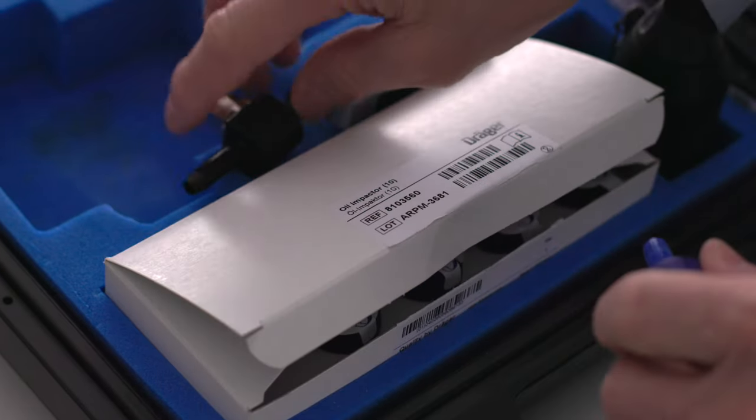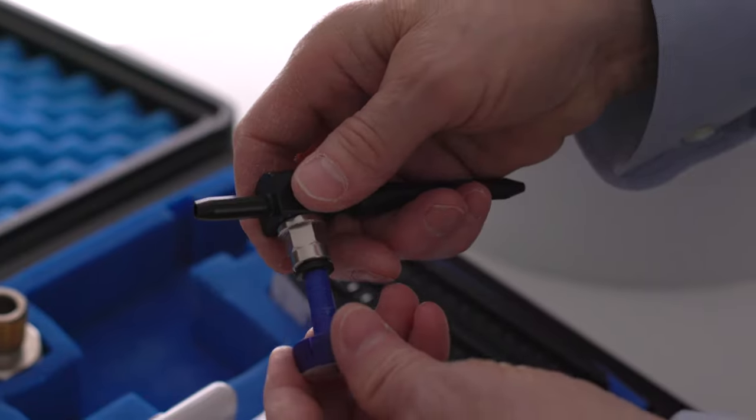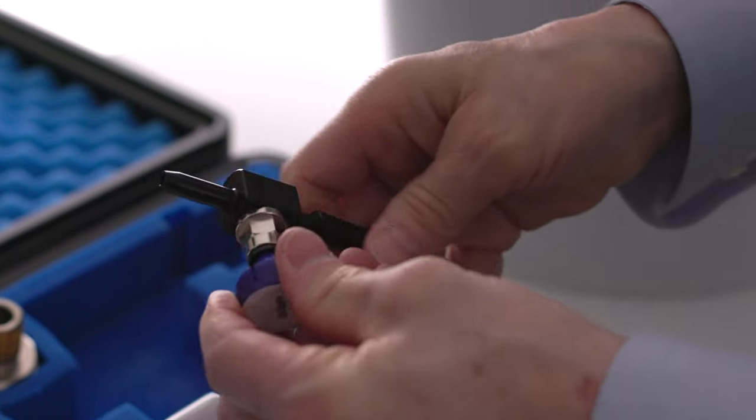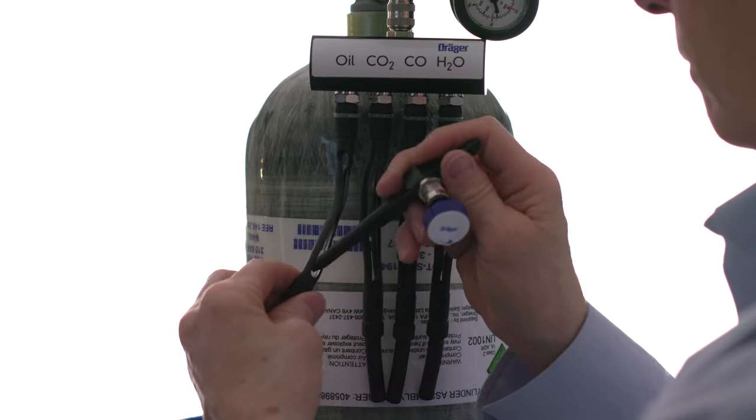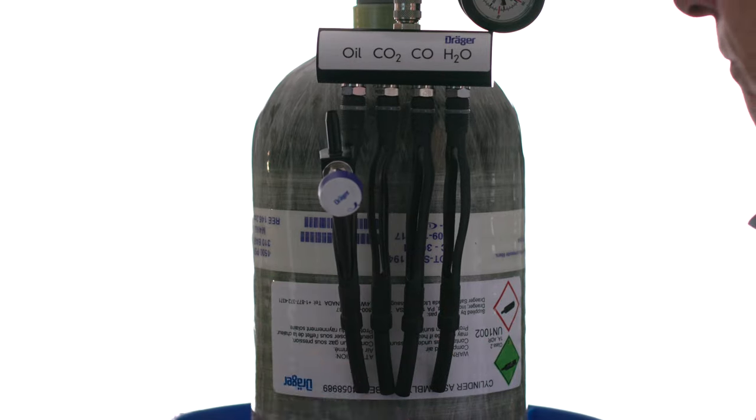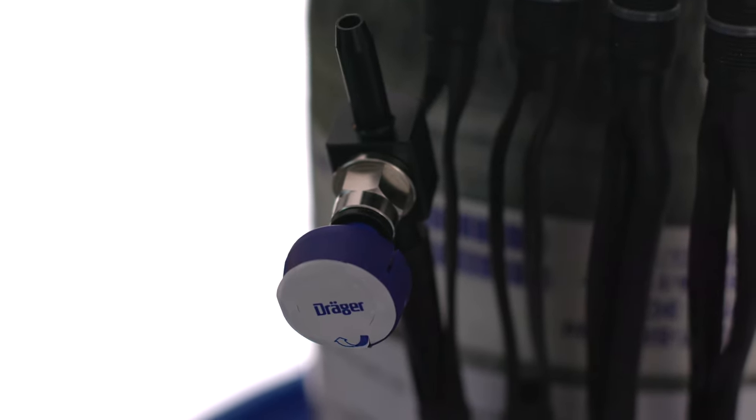Attach an oil impactor to the impactor adapter and insert the adapter into the bottom of the holder designated for oil, leaving the top part disconnected for now. Now, Dreger replaced the oil tube with the oil impactor some years ago because the impactor displays mineral oils and synthetic oils independent of the oil type or viscosity.